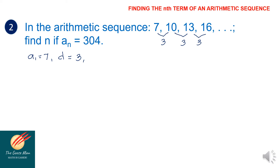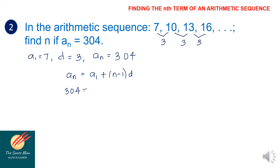From the given, a sub n is equal to 304. Using the formula a sub n equals a sub 1 plus (n minus 1) times d, we substitute: 304 equals 7 plus (n minus 1) times 3, where n is still unknown.